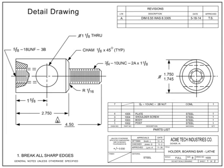A machine drawing details all the information required to take raw material and turn it into a finished part. The machining tolerances, material, finishes, etc. are all shown on the detail drawing.